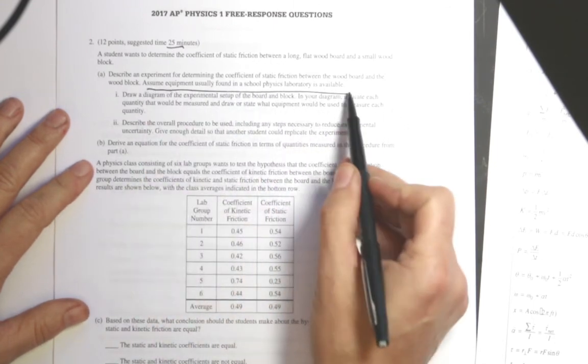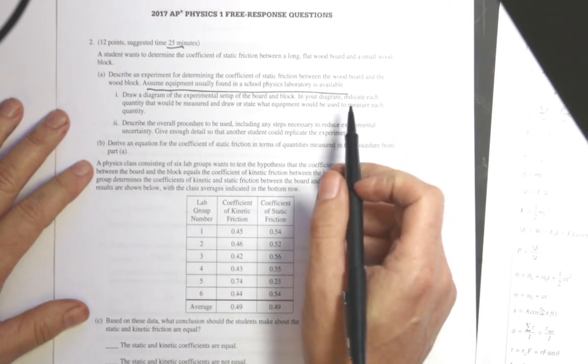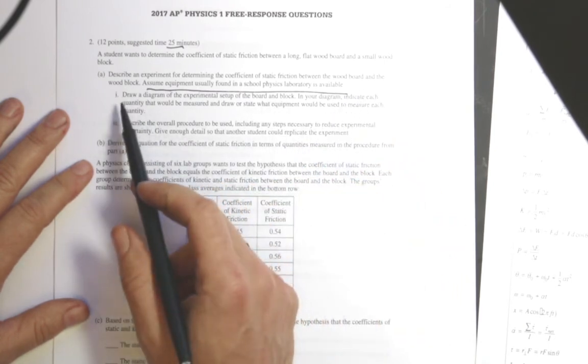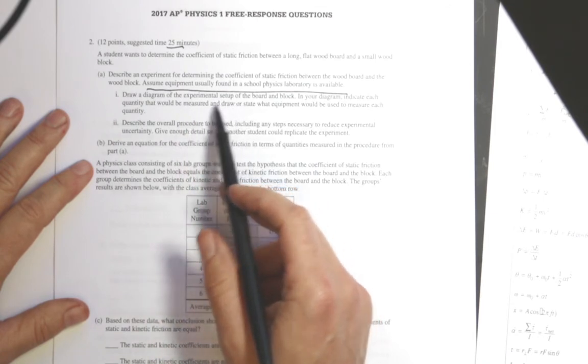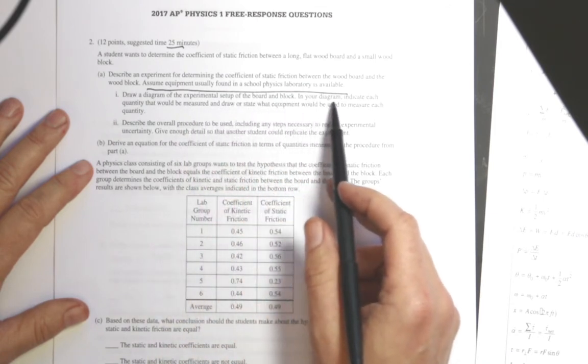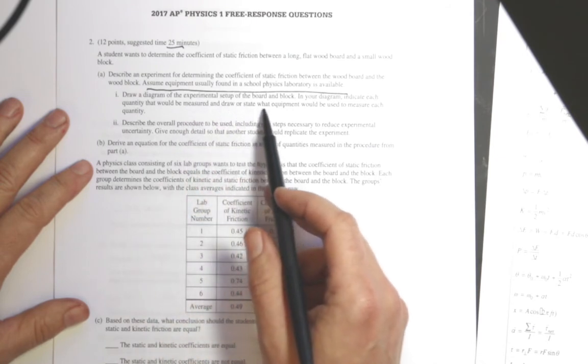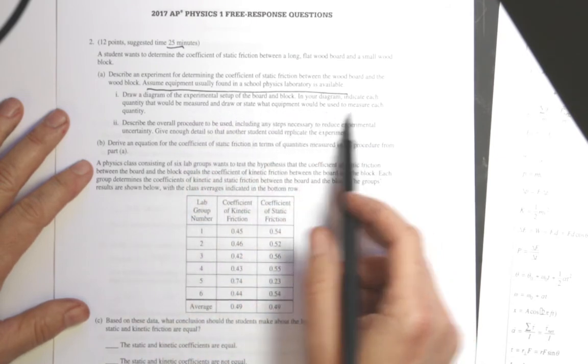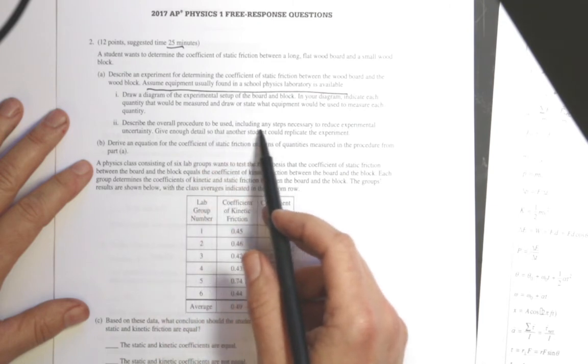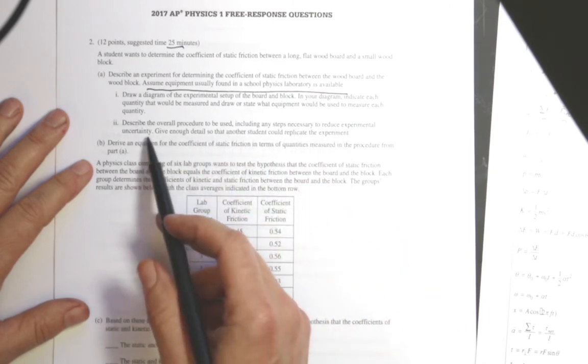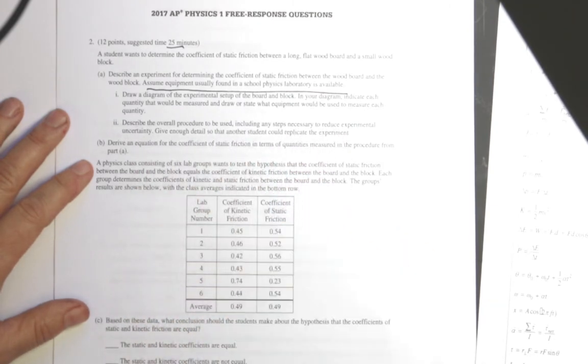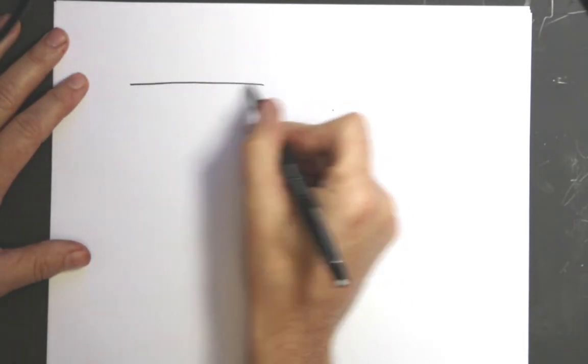Draw a diagram of the experimental setup of the board and block. In your diagram indicate quantities that would be measured and draw or state what equipment would be used to measure each quantity. Describe the overall procedure to be used, include any steps necessary to reduce experimental uncertainty. I have two ways I could do this.